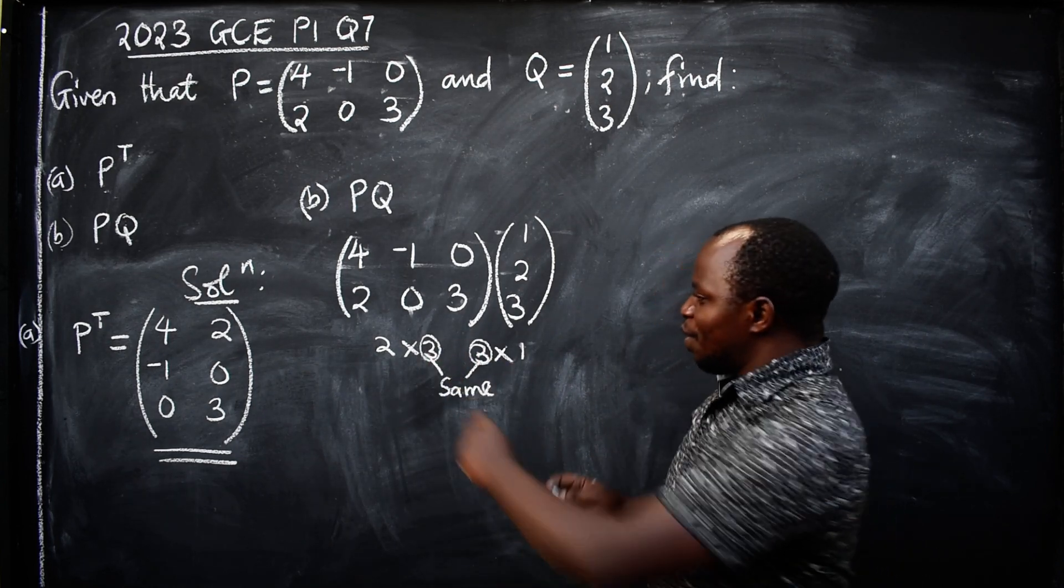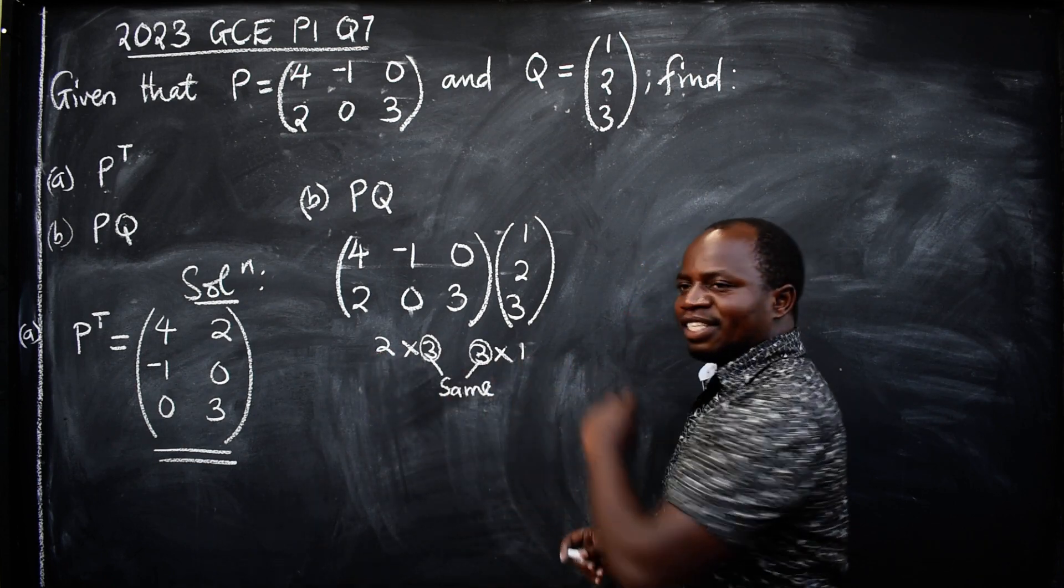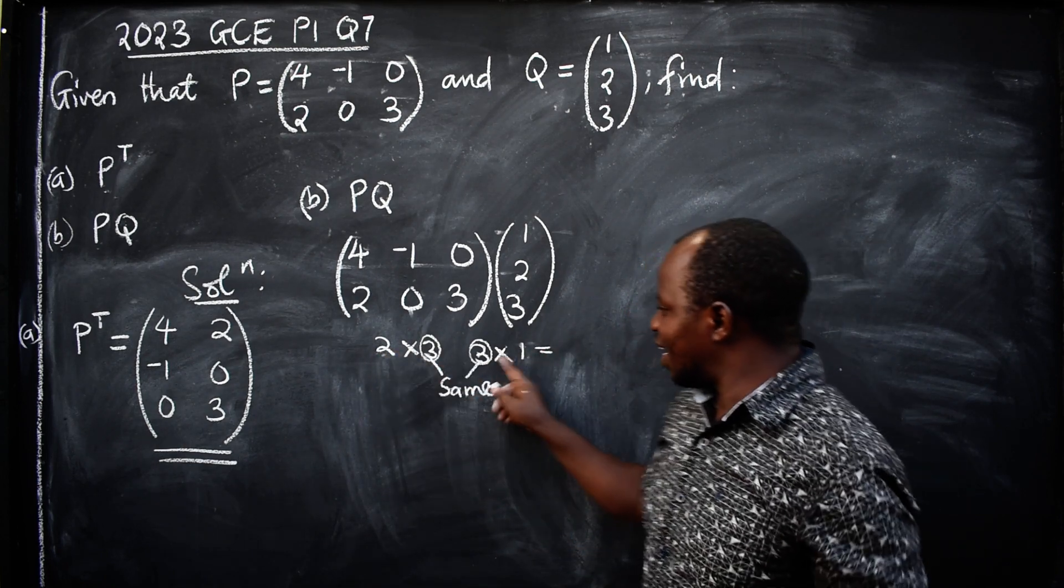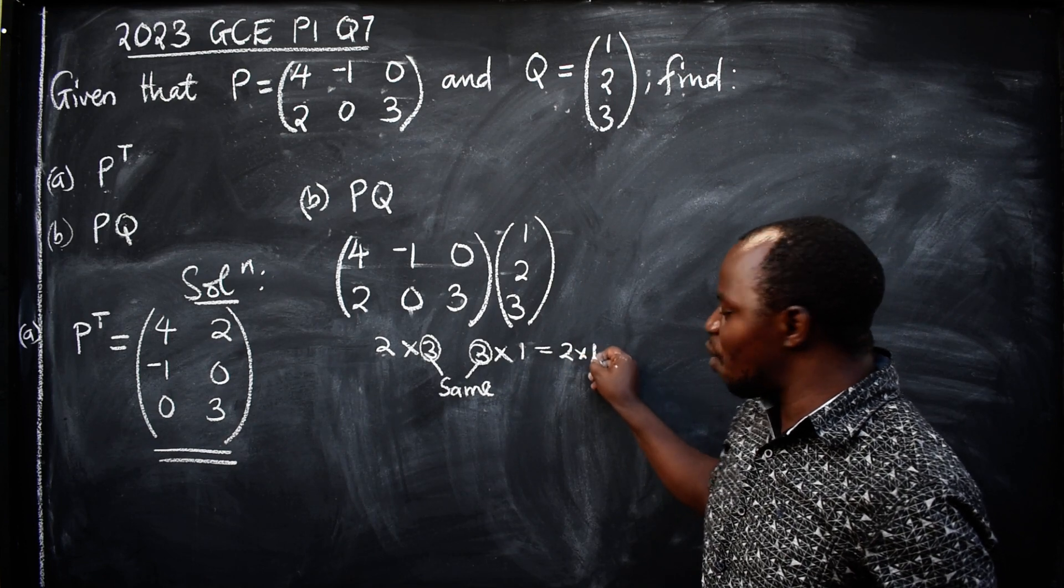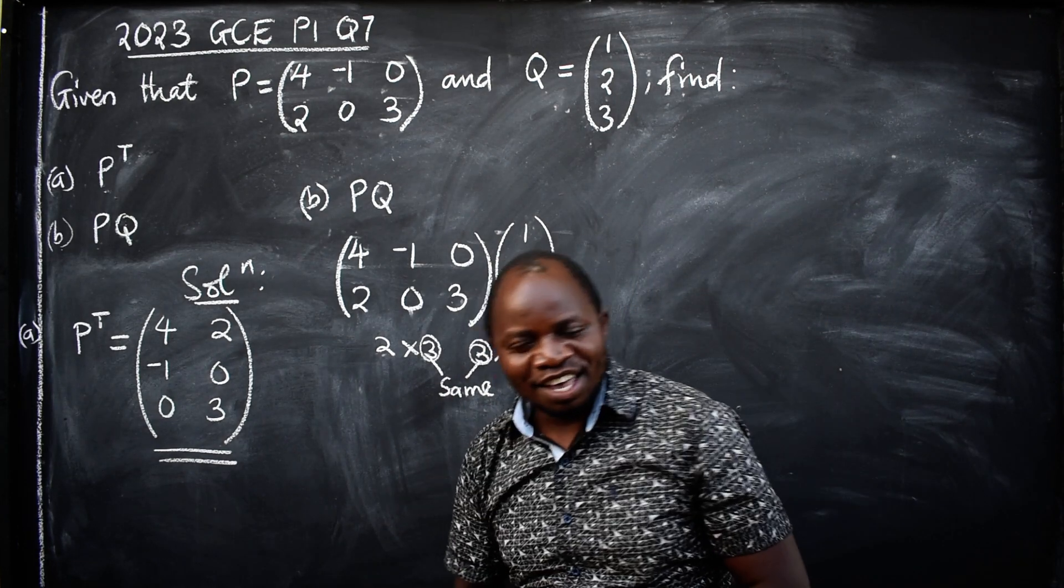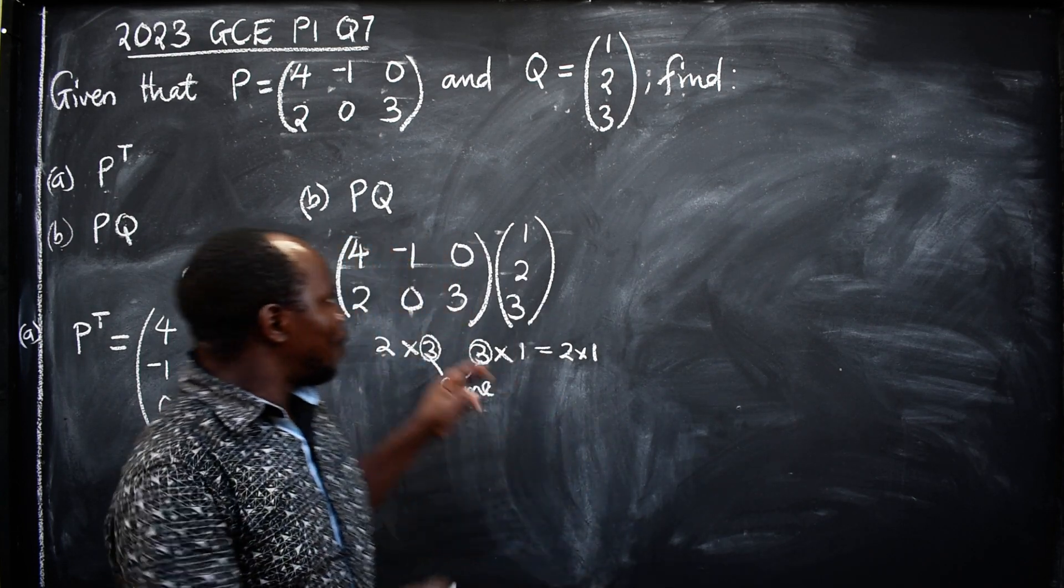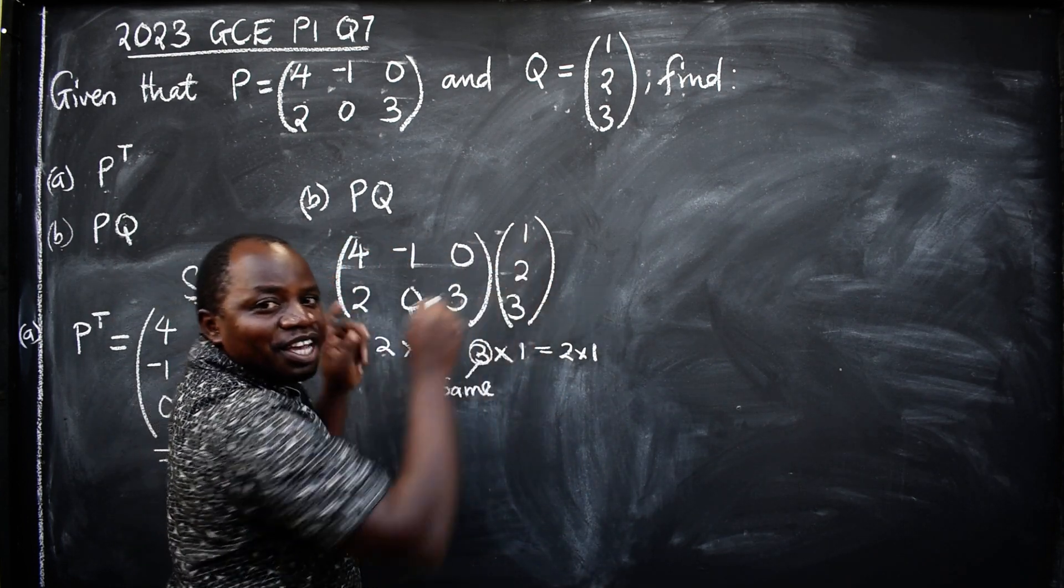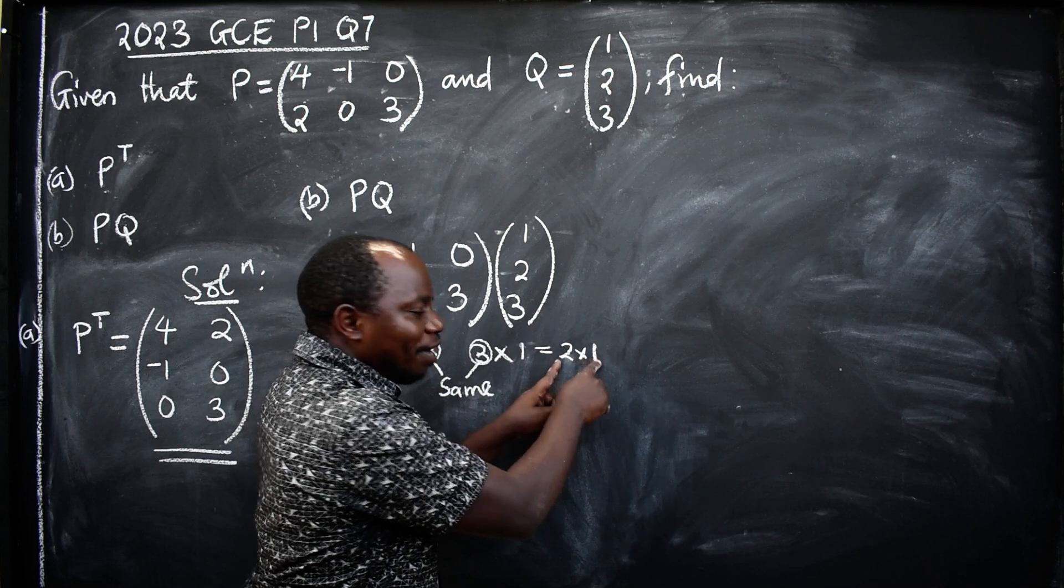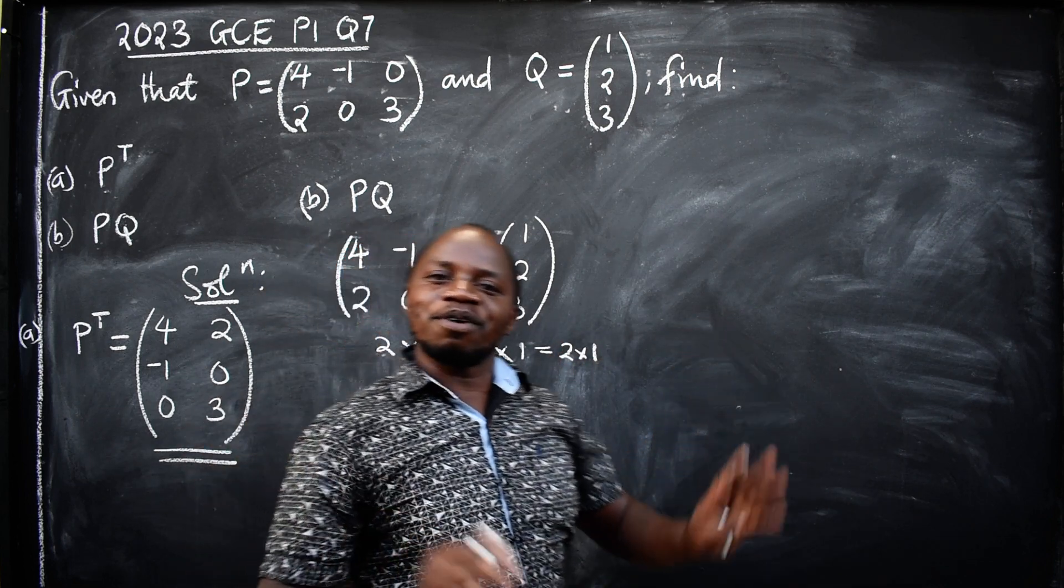I hope we are together. So here it should always be the same. What about the first and the last? The first and the last will give you the order of the answer that you are going to get after the multiplication. So when we multiply the two, the order should be 2 by 1. If we are not going to get this, then we are wrong.